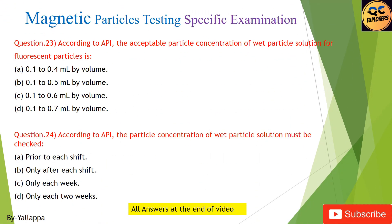Question 23: According to API, the acceptable particle concentration of wet particle solution for fluorescent particles is: (A) 0.1–0.4 mL by volume; (B) 0.1–0.5 mL by volume; (C) 0.1–0.6 mL by volume; (D) 0.1–0.7 mL by volume.